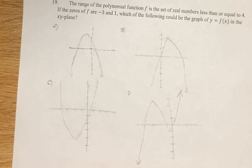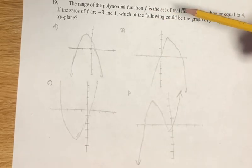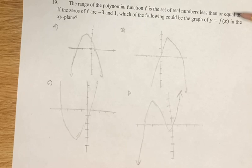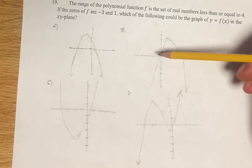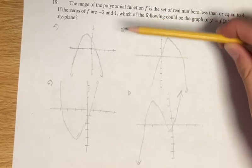So if we're told that the range, which is the y values of f, is the set of real numbers less than or equal to 4, that means we're going to have some maximum value for f, and then everything else for f is going to be below that point.